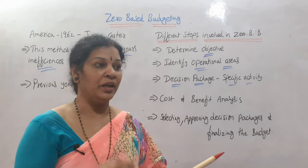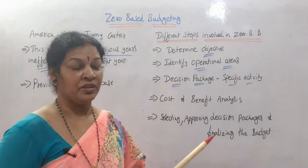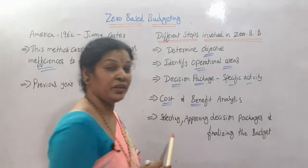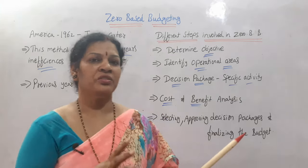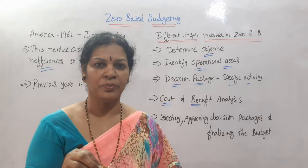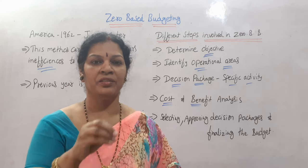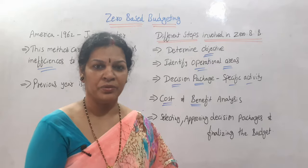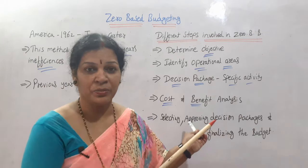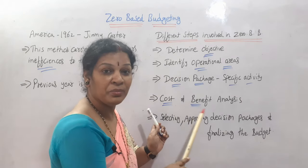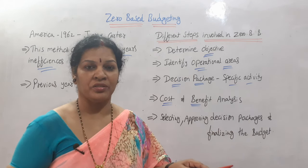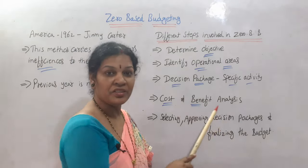The fourth step is cost-benefit analysis, which is very important. Cost analysis looks at how much it costs from the overheads point of view and what price is being decided. Benefit analysis looks at what benefit we are getting when spending a certain amount. We compare cost and benefit — if the benefit is not much, we decrease the cost.